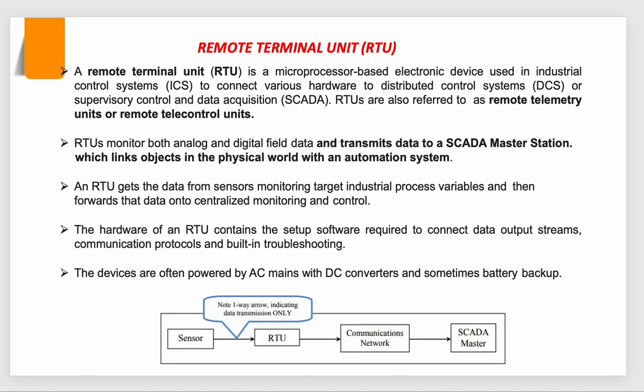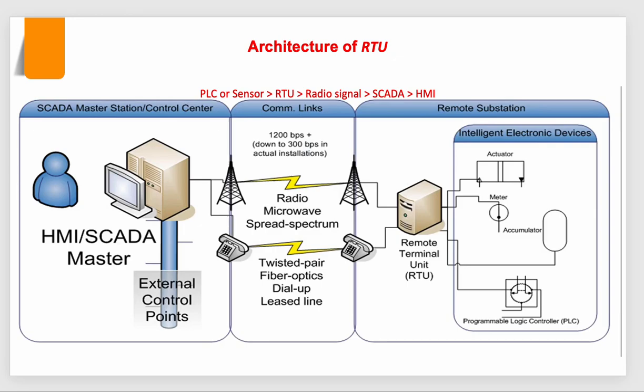The RTU transfers data from the remote terminal unit — for example, when your plant is situated far from your main center — from there to your main center. It mostly transfers data wirelessly, in the form of radio waves, but we can also use a LAN cable.